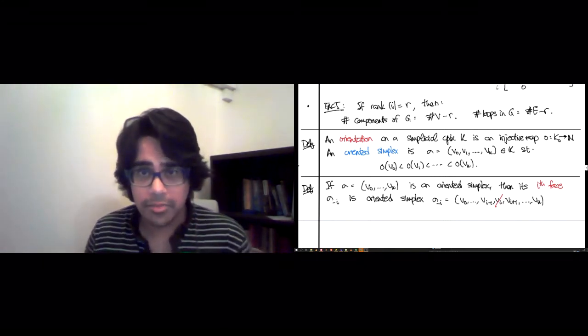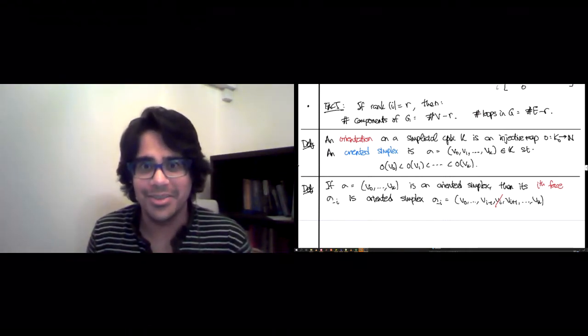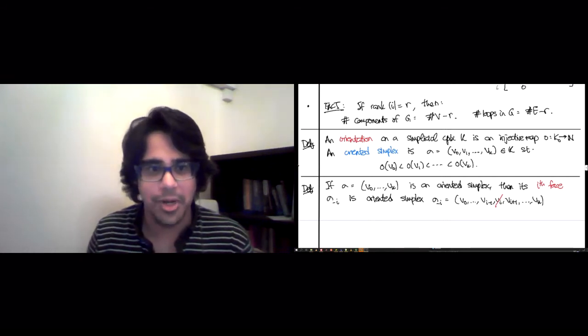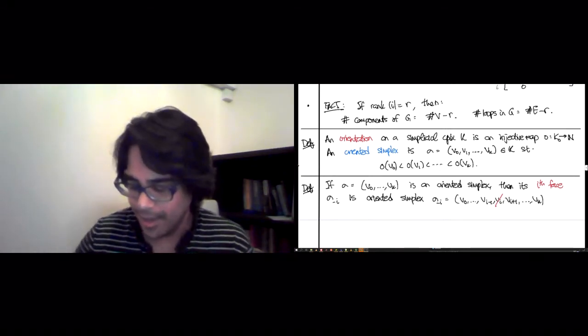Now is where the algebra is just going to sneak into the story and we're never going to get rid of it again. So this is where topology becomes algebraic. It looks like almost nothing is happening, but it's sort of this insidious step.